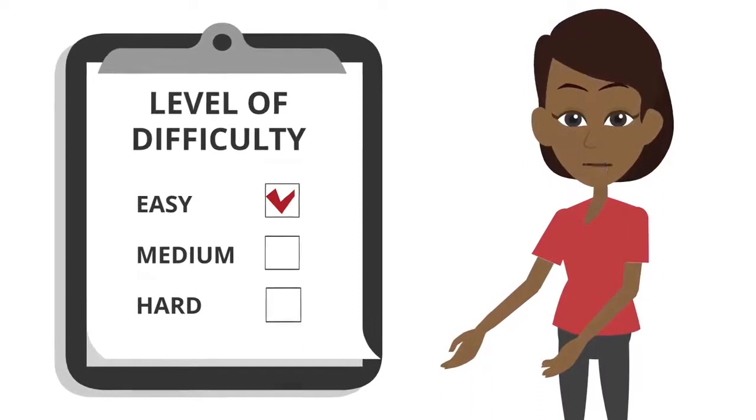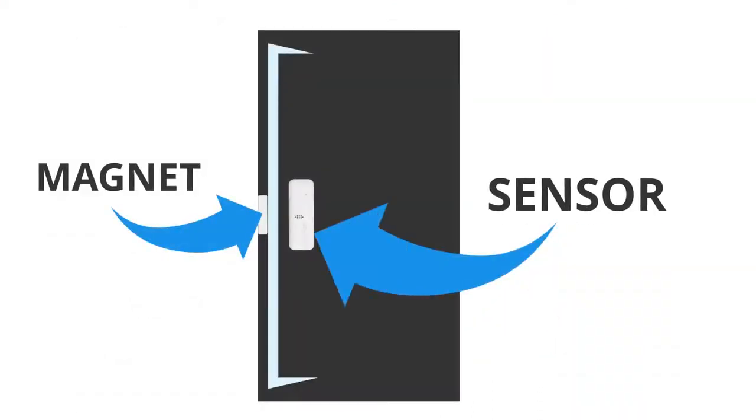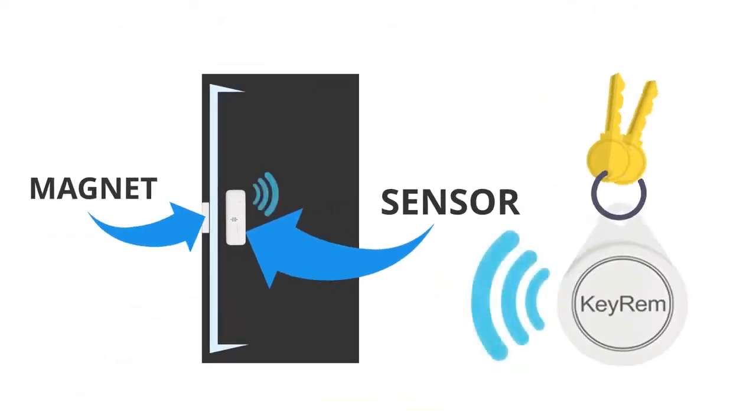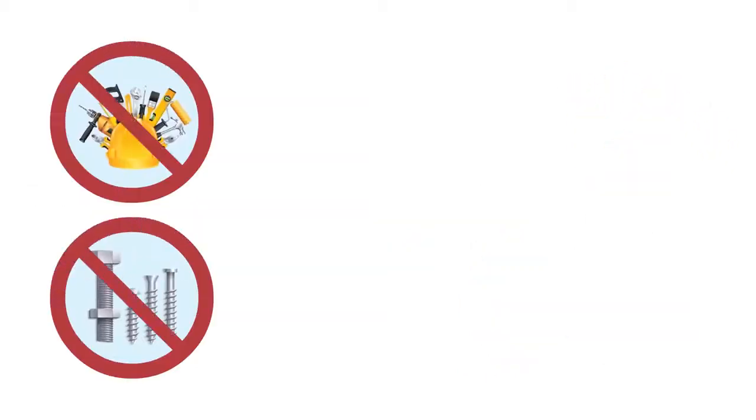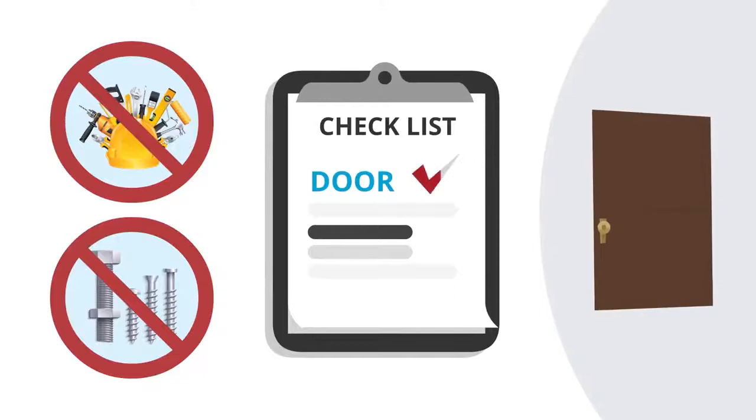Keyrem is simple to use. All you have to do is install the sensor to your door and attach our key fob to your house keys and you are ready to go. No tools or screws are required. All you need is a door.